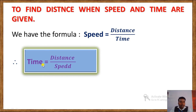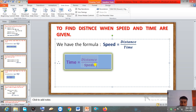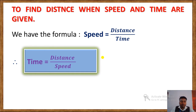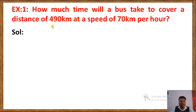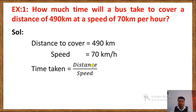The formula for time equals distance divided by speed. Let's see another example: how much time will a bus take to cover a distance of 490 kilometres at a speed of 70 kilometres per hour? Distance to cover is 490 km and speed is 70 km/h. We have to find the time.